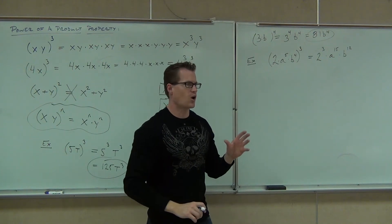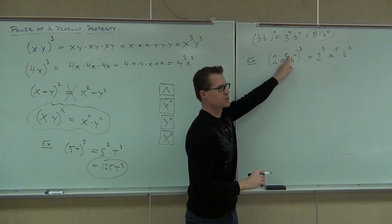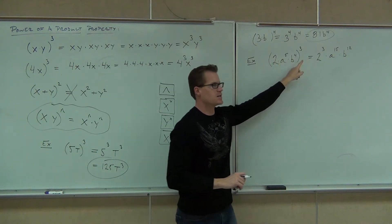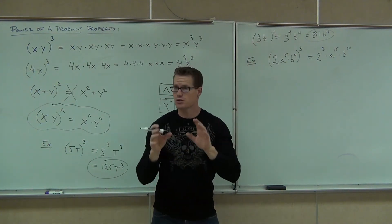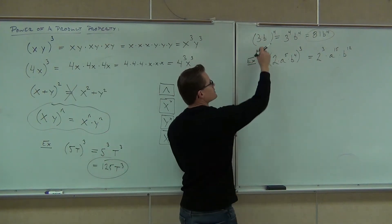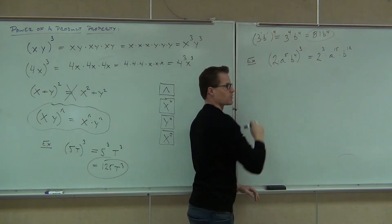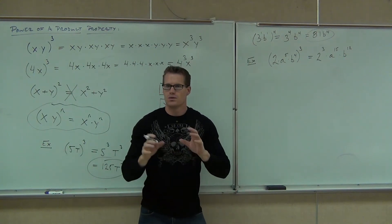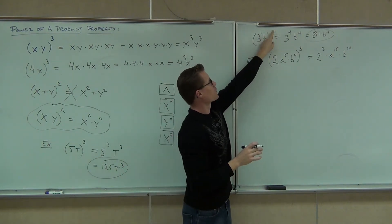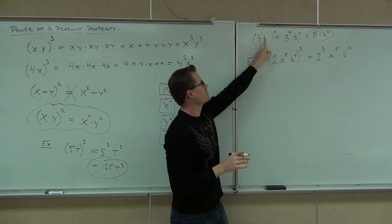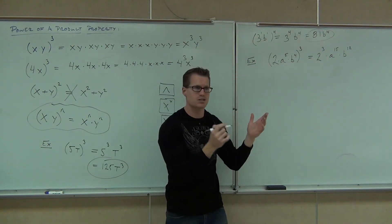One great question I always get is: why do you multiply these exponents, but you don't multiply the 3 times the 2? Why is this going to be an 8 and not a 6? Here's the thing — you've actually been doing this the whole time. When we did this, this is actually 3 to the 1st power. And this is actually b to the 1st power. When you take an exponent to an exponent, you multiply it. So 3 to the 1st to the 4th: 1 times 4, that's how we got 3 to the 4th. b to the 1st to the 4th: 1 times 4, that's how we got the 4 there. So it is the same thing — we just have special cases where we only have exponents of 1.